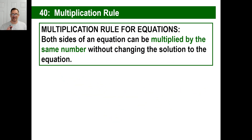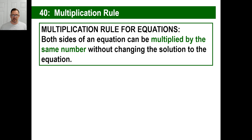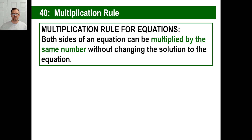Our rule — make sure you write this down and know exactly what it means. This is the multiplication rule for equations. Remember last time we had the rule that said if you added a certain number to one side of an equation, you have to do exactly the same thing to the other side. This is the same thing. Both sides of an equation can be multiplied by the same number without changing the solution.